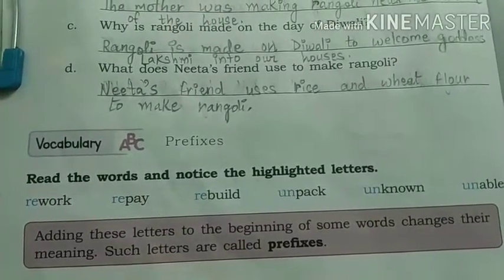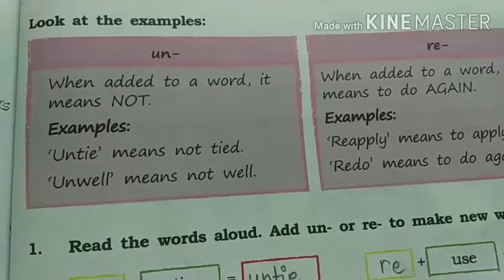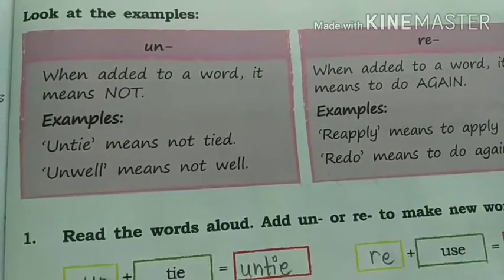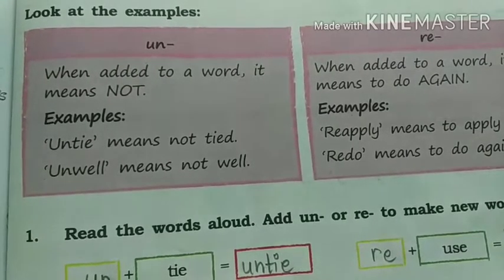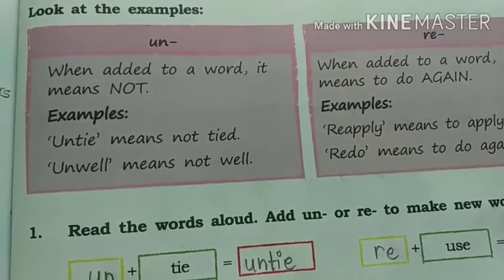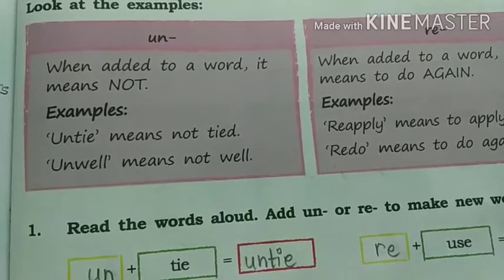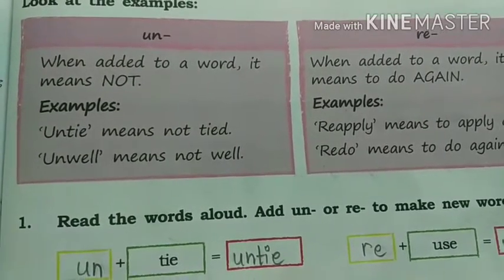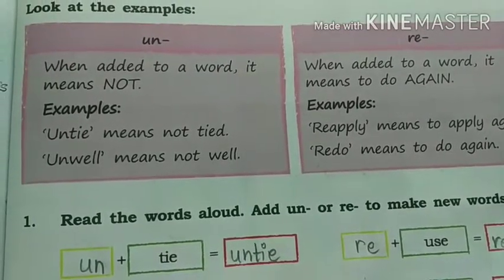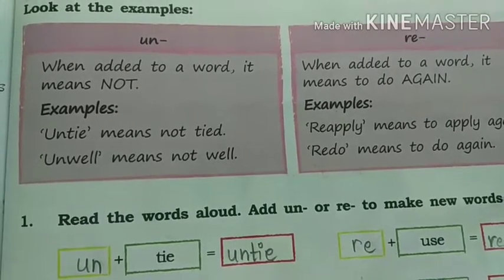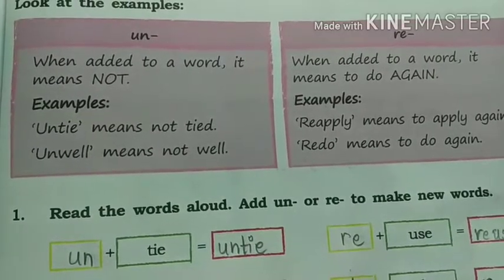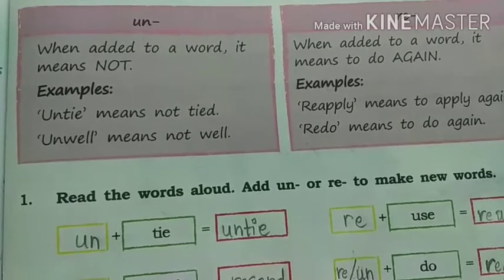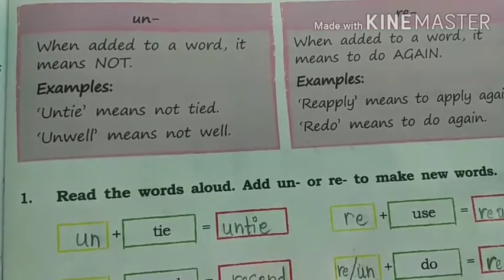Now let us look at the examples on page number 89. There are examples of 'Un' and 'Re' — they are both prefixes. 'Un', when added to a word, means 'Not'. For example: Untie means not tied; Unwell means not well. 'Re', when added to a word, means to do again. For example: Reapply means to apply again; Redo means to do again.